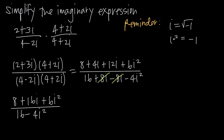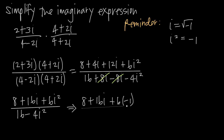At this point we need to remember that i squared equals negative 1, so we substitute negative 1 for every i squared. We leave the i-to-the-first-power terms alone. So we have 8 plus 16i — leaving that i alone — and instead of plus 6i squared, we write plus 6 times negative 1. In the denominator, we have 16, and instead of minus 4i squared, we write minus 4 times negative 1.